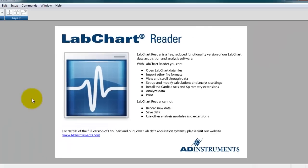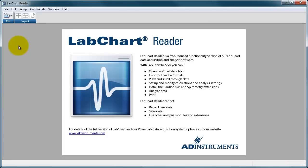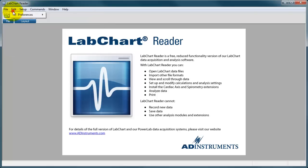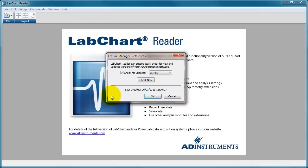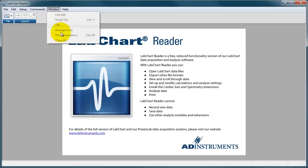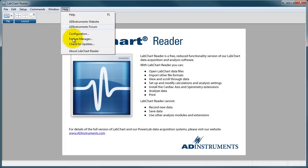When you open LabChart Reader, it's a standard Windows or Mac program with the usual menus at the top. Under Edit, in the preferences window, there's the feature manager which lets you check for updates — I recommend leaving this on to ensure you have the latest version. The setup command boxes don't do anything until you have data on screen, and there's a window menu and a helpful Help menu to visit the AD Instruments website, check for updates, and find functions.